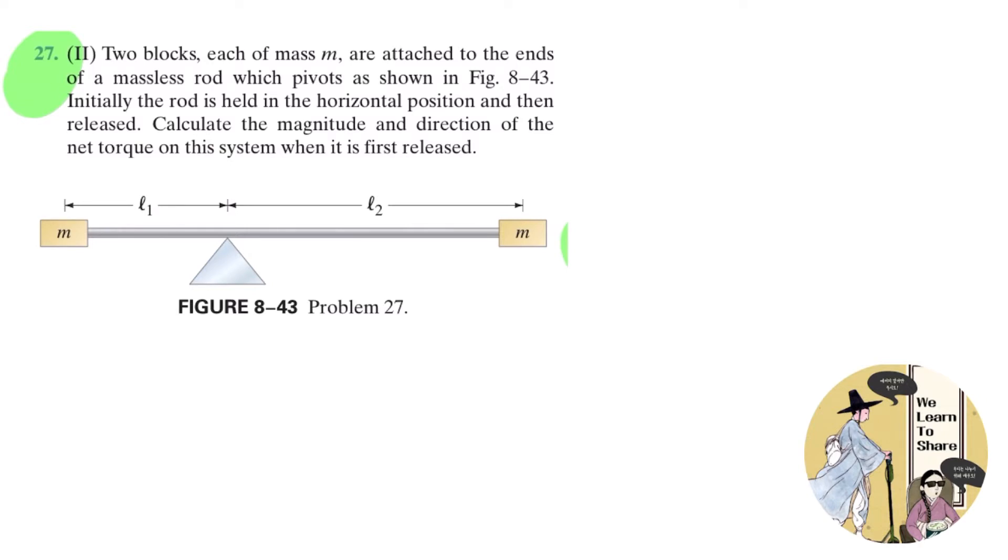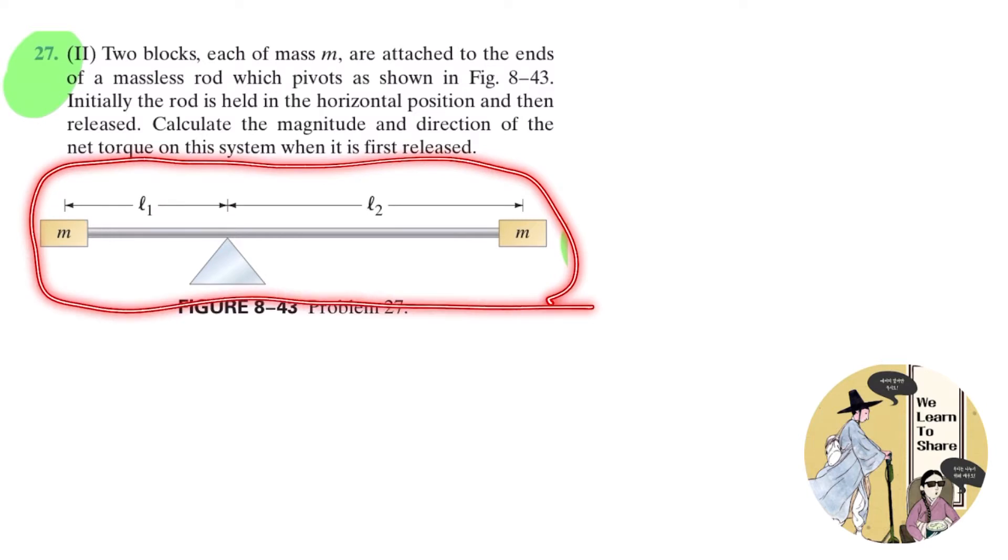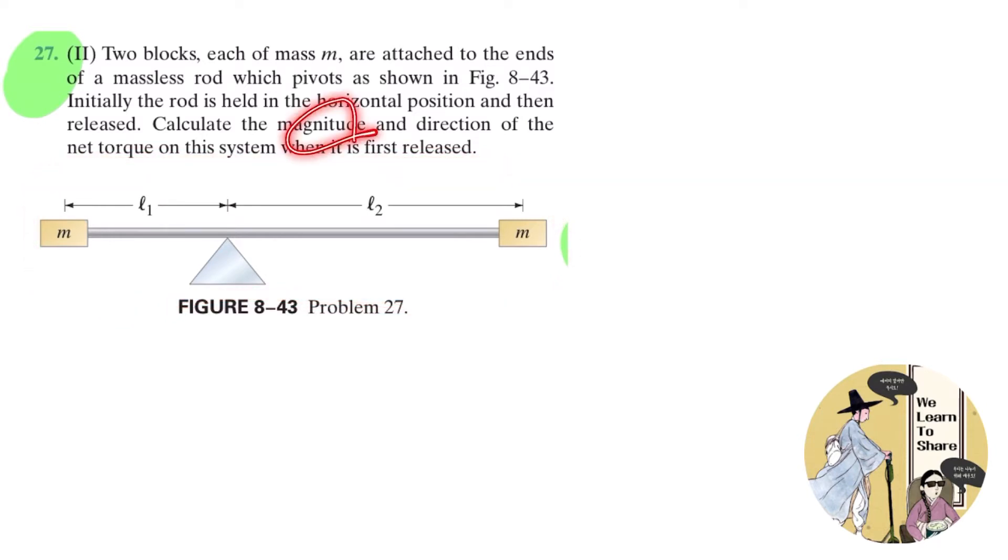Two blocks, each of mass M, are attached to the ends of a massless rod, which pivots as shown in Figure 8-43 over here. Initially, the rod is held in the horizontal position and then released. Calculate the magnitude and the direction of the net torque on the system when it is first released.